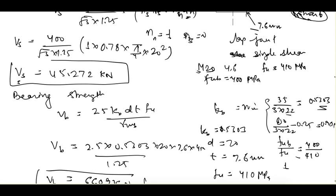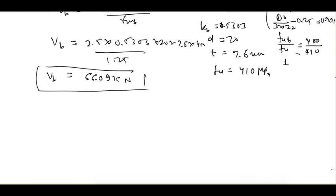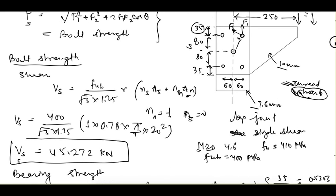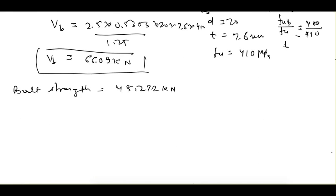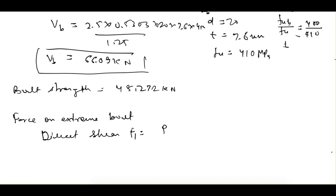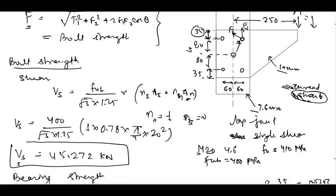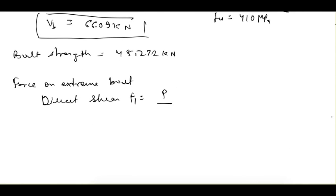The minimum of the two values is 45.272 kN, so the bolt strength = 45.272 kN. Now let's find the force on the extreme bolt. We have two forces F1 and F2. F1, the force due to direct shear, equals P divided by the number of bolts. There are 5 bolts, so F1 = P/5 = 0.2P.